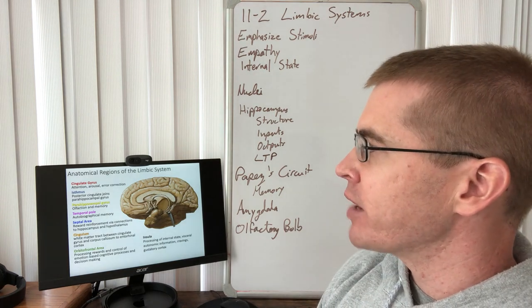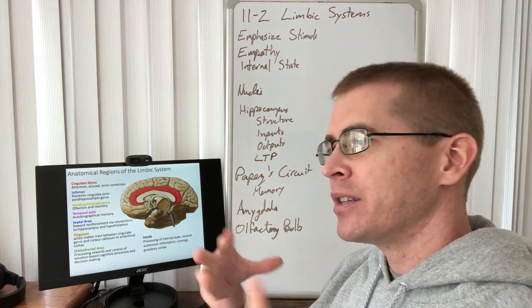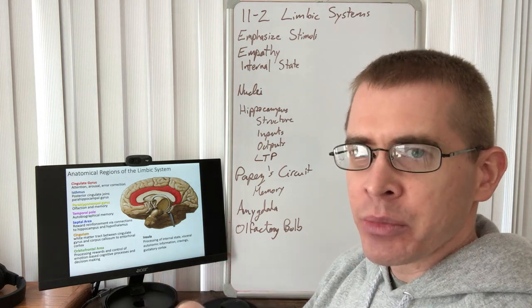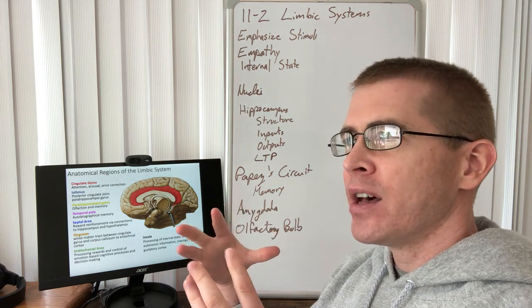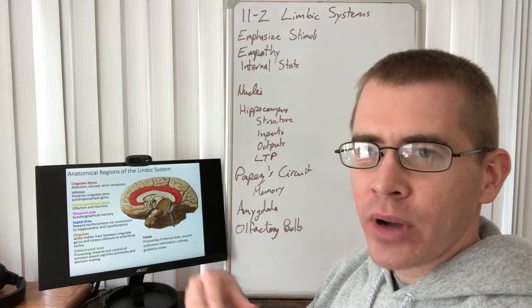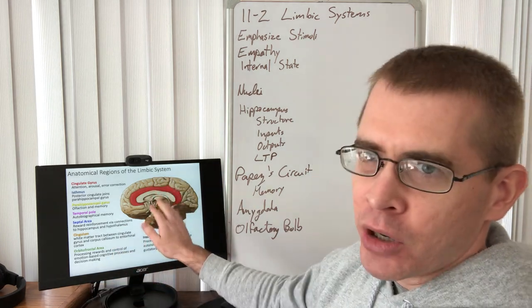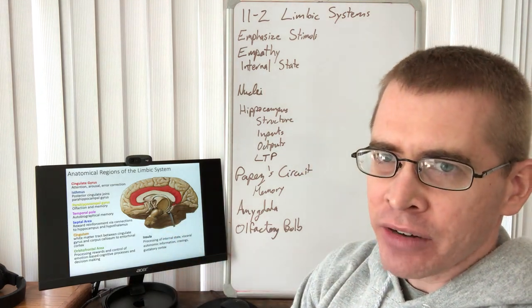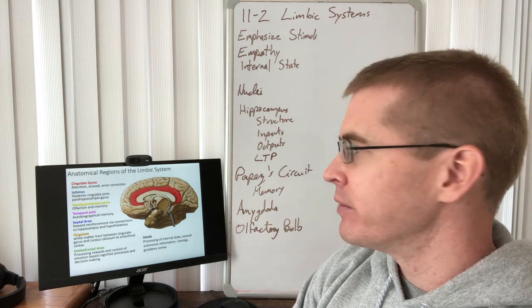We've talked about the cingulate gyrus before, cingulate gyrus here in red, in terms of its directing of arousal states, attention, as well as error correction. So remember the Stroop's task or the Stroop's test, where the name of a color is written in a different color of ink. So the word red is written in yellow, and you have to very quickly say one or the other. That is a potent activator of the cingulate gyrus. Pain is activated in the anterior cingulate gyrus. If there's a painful stimulus, then the cingulate gyrus is being activated as well.